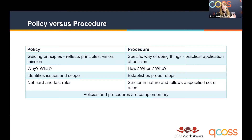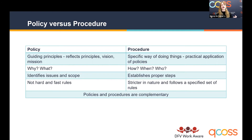A policy identifies the issue and the scope, while a procedure establishes the steps — how are we addressing and responding to this? A procedure is stricter in nature and follows a specified set of rules, ensuring no one slips through the cracks by being clear on who is doing what, in what time frame, and how it will be implemented. The real takeaway is that they are complementary: a policy cannot exist without procedure, and every procedure needs a guiding policy.